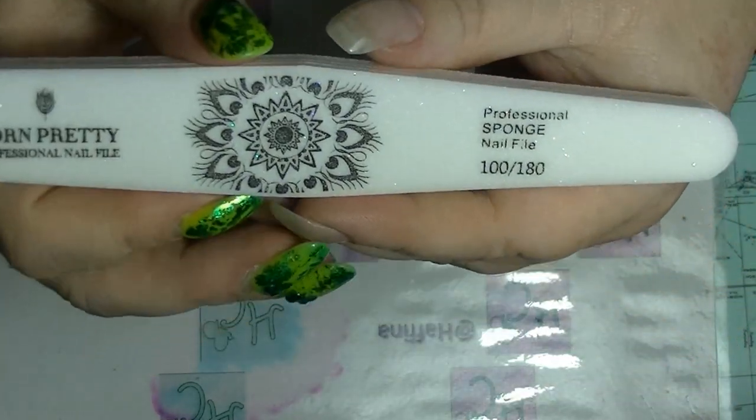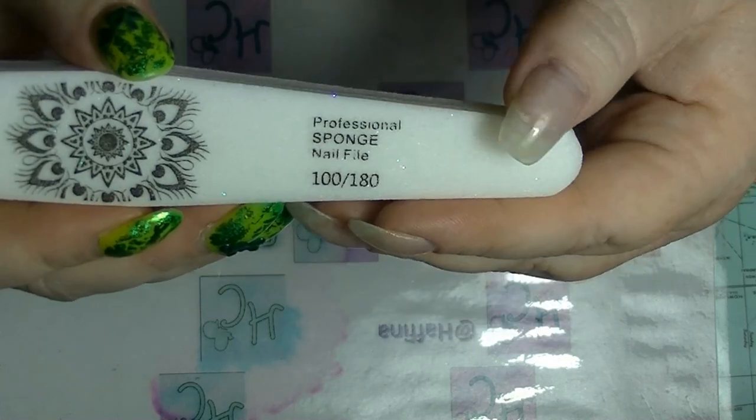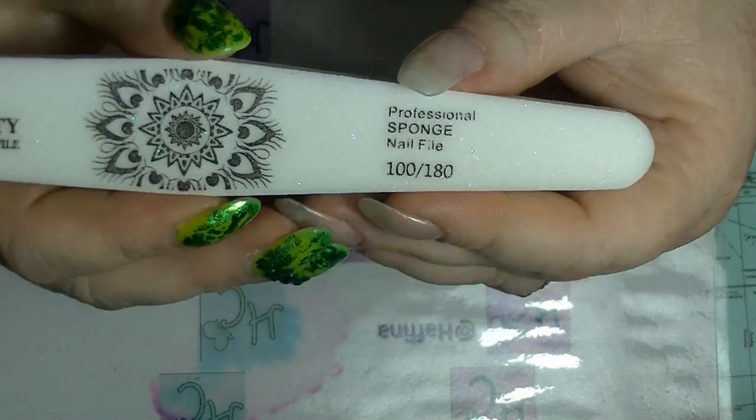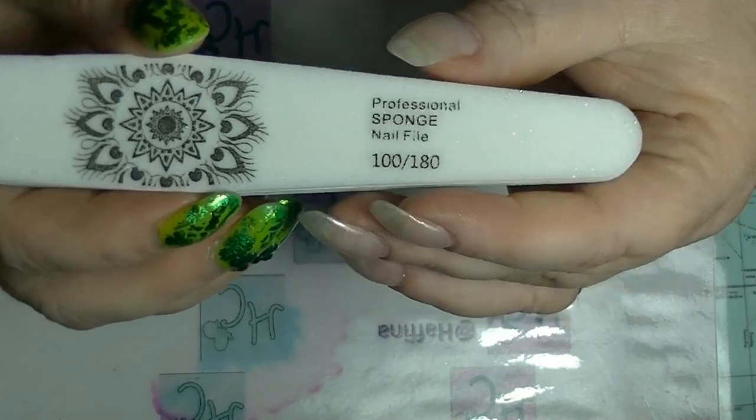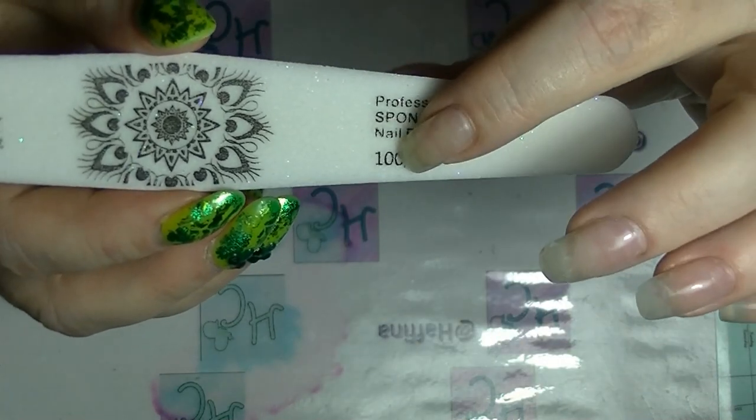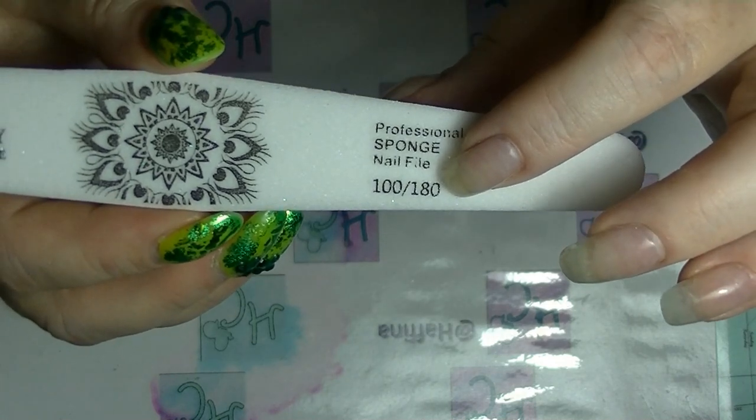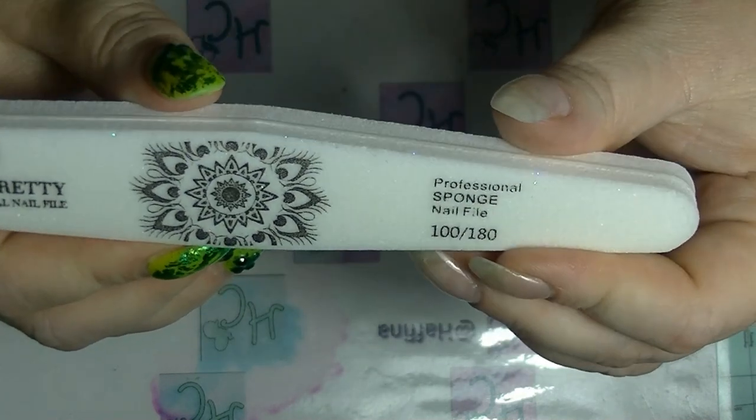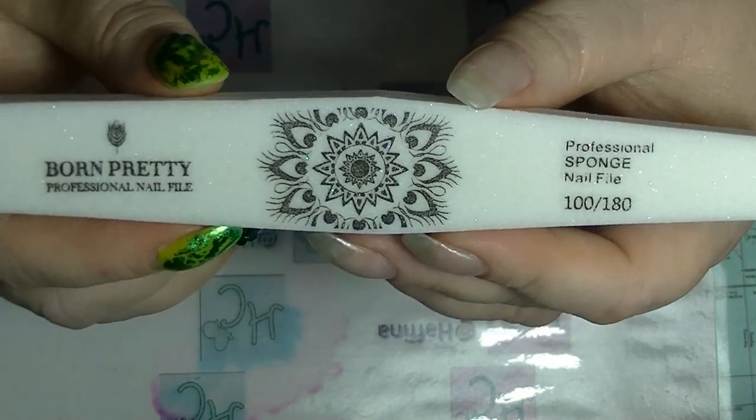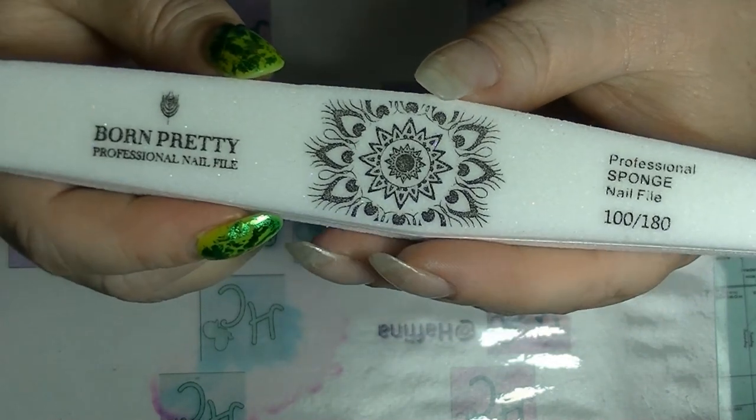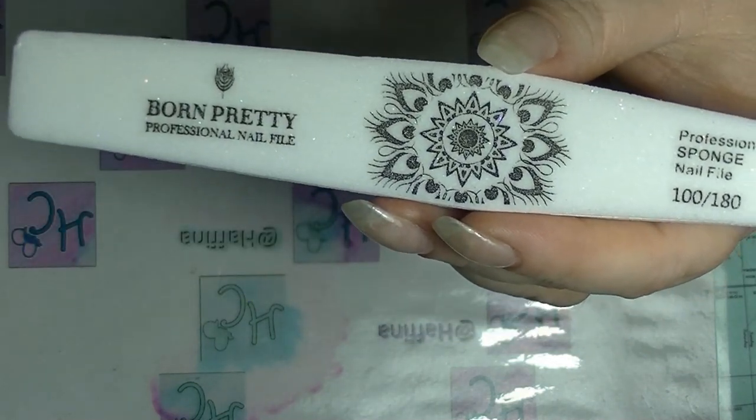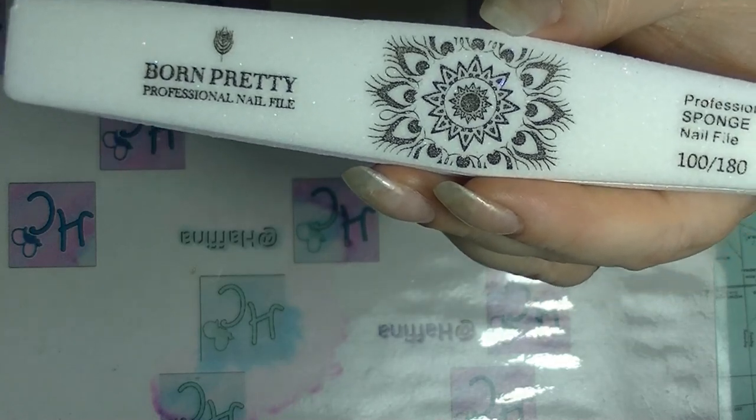The grit is a reference to how strong the sandpaper, which is effectively what a nail file is, actually is. The higher this number is, the finer the grit is. So this is a fairly rough file in comparison to other files that you can actually get.